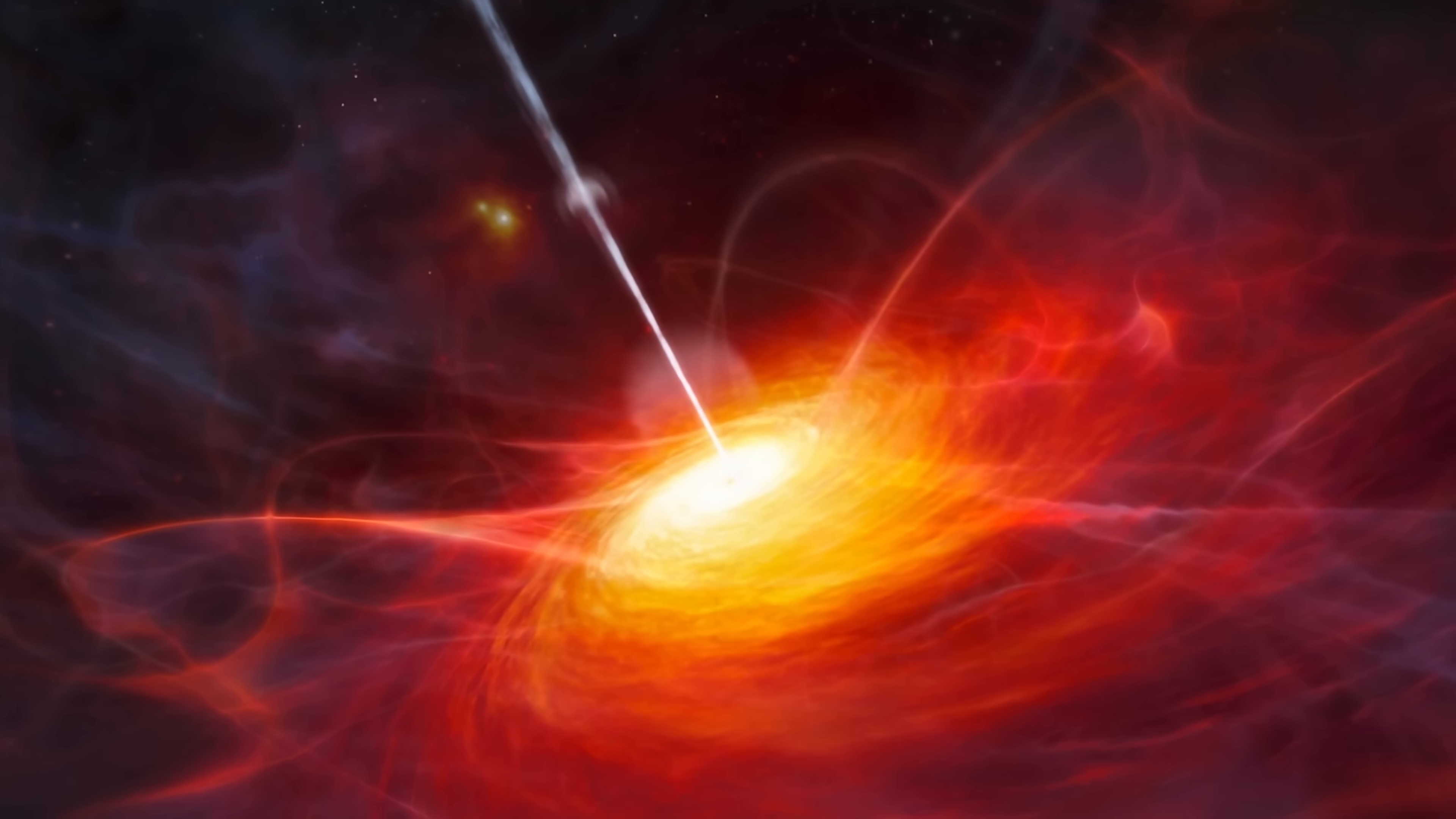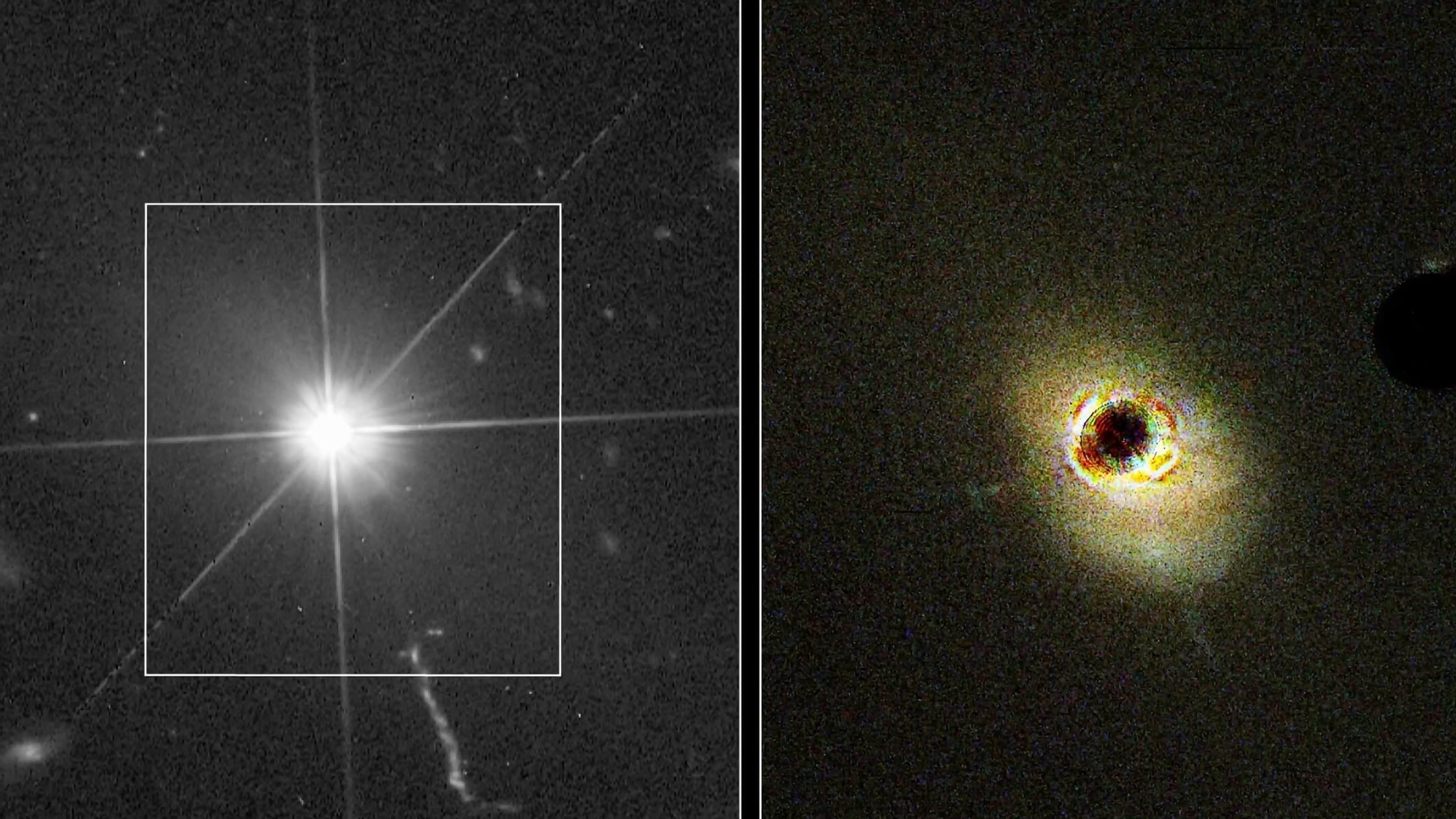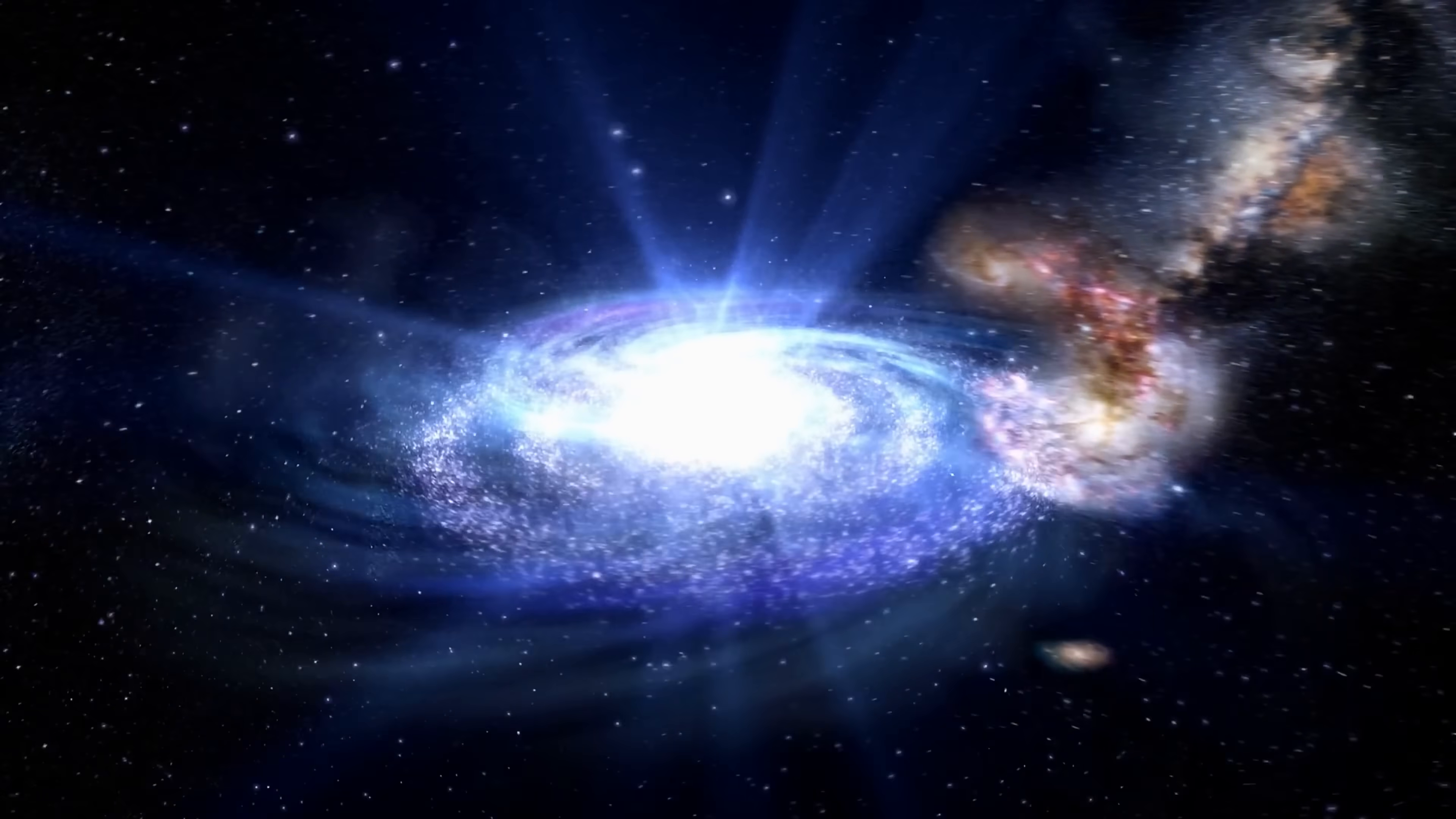However, we do see quite a lot of quasars. Actually, over a million have already been discovered in various locations in the universe. And quasars are essentially very, very bright galaxies powered entirely by a really, really massive central black hole. And because they're generally extremely efficient at producing all sorts of powerful light, with many of them existing before reionization, some scientists believe that maybe it was quasars after all.